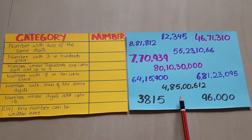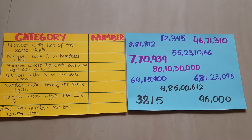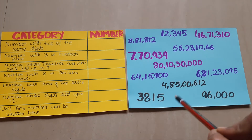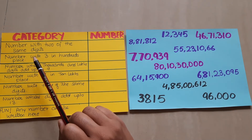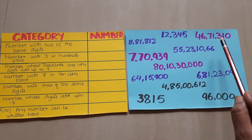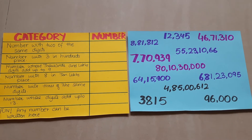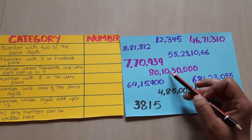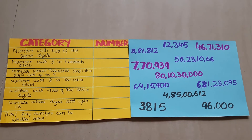The last activity is a number hunt — a very interesting one. You have a set of numbers and a clue card. From the clues, you have to find the matching number. For example: the first clue is 'a number with two of the same digits' — find which number has a repeated digit. The next clue is 'number with three in the hundreds place' — identify which number has three in hundreds place. Another clue is 'a number whose thousands and lakhs digits add up to nine.'